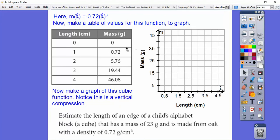Notice this is going to be a vertical compression because that 0.72 is less than 1. So remember, our typical cubic graph goes up like this and goes like this, but we're talking about length and mass, so we can disregard the negative stuff. We're going to start it at 0. So let's graph (0,0), there it is. Let's graph (1, 0.72). So over 1, up just a little bit, 0.72.